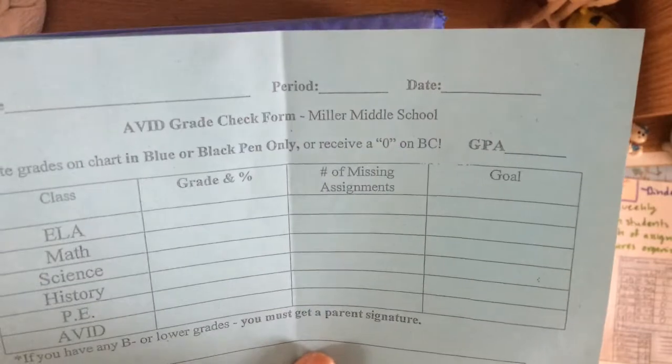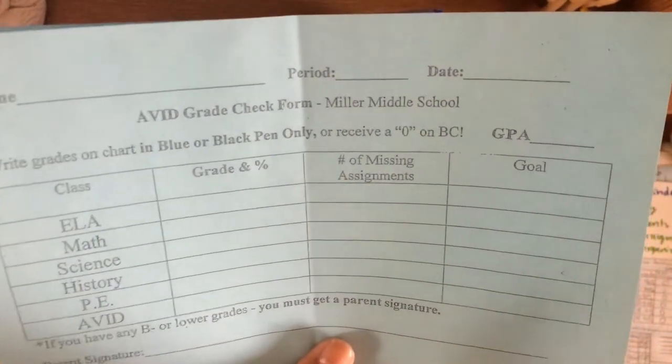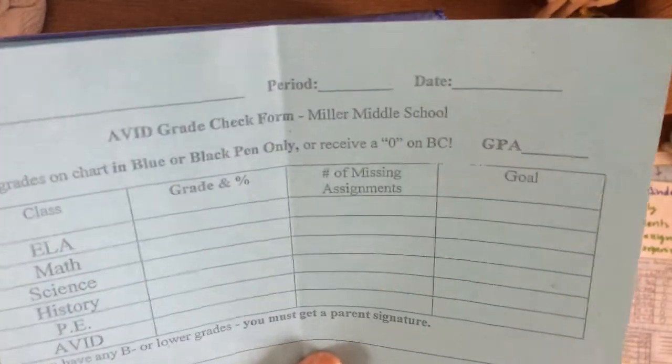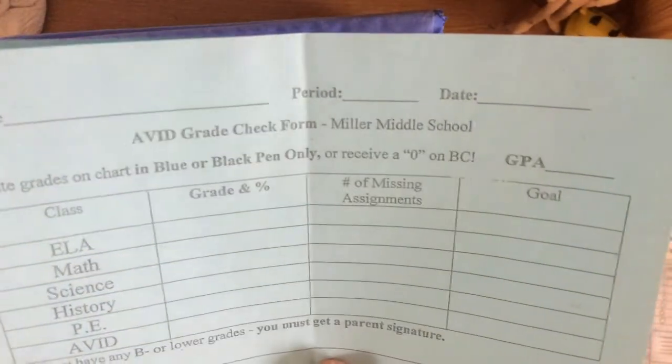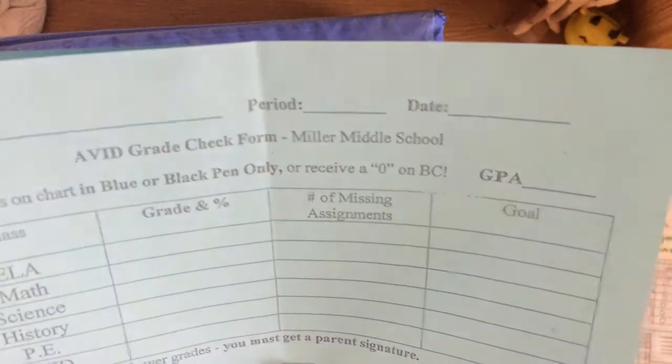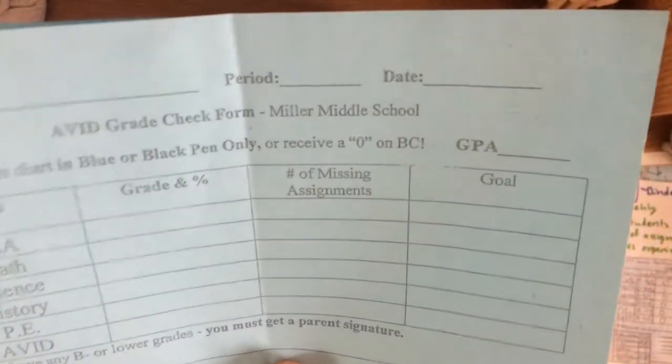I would suggest making realistic and easy to achieve goals. For example, if you have a 79% in math, you would want to have your goal be 80% rather than 100. It's best to go slowly. So after you get that 80%, you get an 85, then try to get a 90, then try to get a 95, and then finally you can try to get 100%.